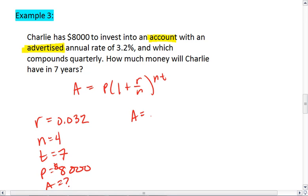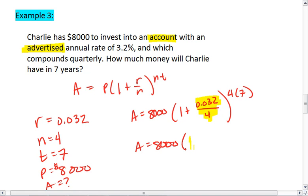We get A equals 8,000 times 1 plus 0.032 over 4 to the 4 times 7. A equals 8,000 times. In parentheses, you want to do this division first. So 0.032 divided by 4, which gives us 0.008. And then we add that to 1, which gives us 1.008.